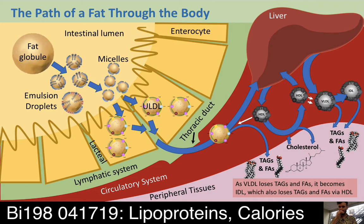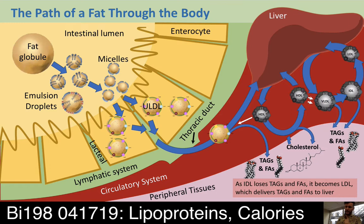The liver also releases VLDL — very low-density lipoprotein — which is how the liver directly transports triglycerides and fatty acids. HDL does essentially the same thing to VLDL that it does to chylomicrons: it potentiates the lipoprotein to unload its cargo. Think of ULDLs and VLDLs as trucks driving around the circulatory system delivering fats, and HDL as the workers unloading those trucks and delivering the cargo to cells. As VLDLs unload fats, they become more dense, transitioning through IDL to finally become LDL molecules.